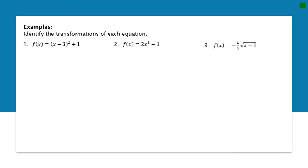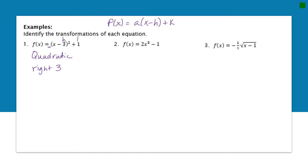We're going to identify the transformations of each equation. For number one, I see parentheses with a square on the outside, so this is from the quadratic family. I don't see any a value in front of the parentheses, so nothing different is happening there. Inside the parentheses is my h value. Rewriting the standard form: x minus h plus k — my h value is negative three. Since it's inside the parentheses, it's the opposite, so negative three shifts the graph to the right three. My k value is plus one, same sign, so the graph is shifted up one.